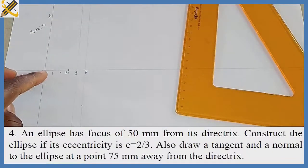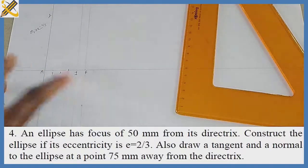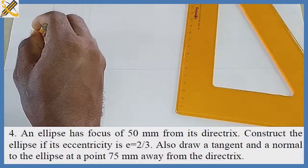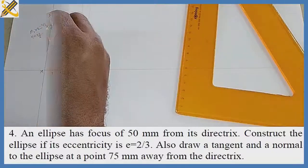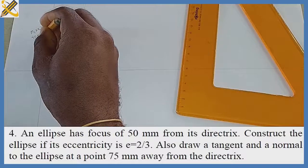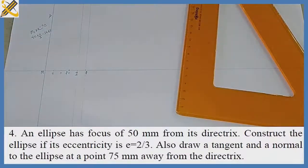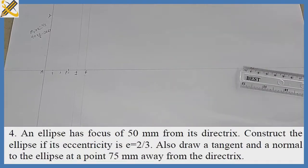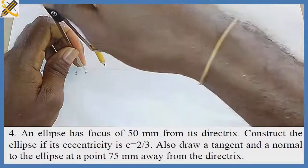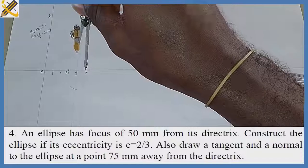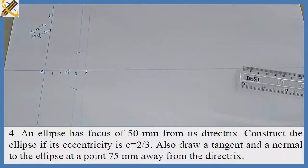Our e equals 2/3. The distance from M to point 1 is 40mm. So: 40 times 2/3, which approximately equals 26.67. With my compass picking radius 26.67 at center F — our focal point — I strike an arc on mark 1, both top and bottom.